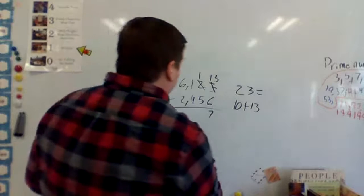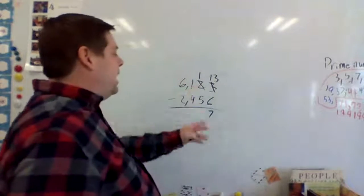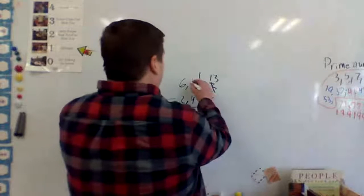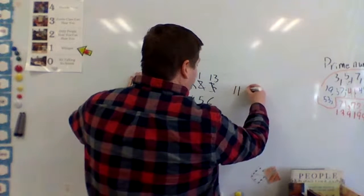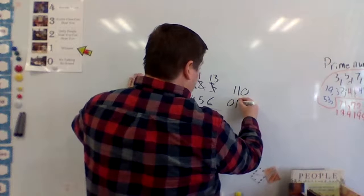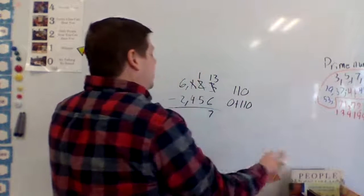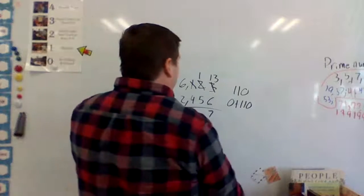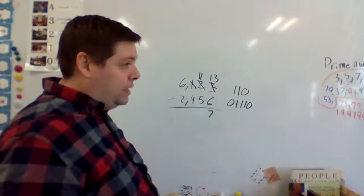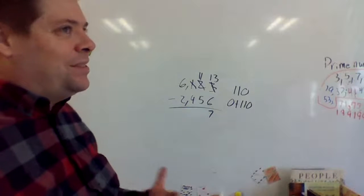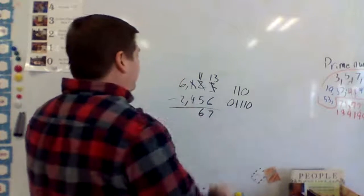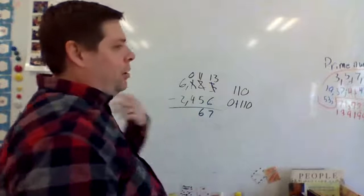Next up — I ran into the same problem: I'm trying to do 10 minus 50. Can I do that? I can't, so I have to borrow again. I'm taking 110 and turning it into 0 plus 110, so that I can now take away 50. So 110 minus 50 — well, 100 minus 50 is 50, then I add another group of 10, which gives me 60.